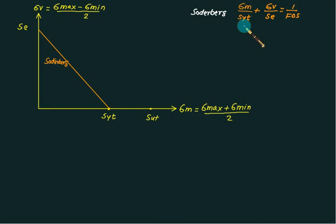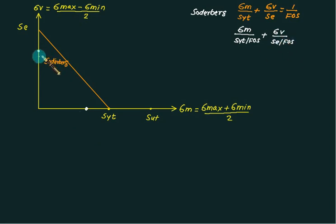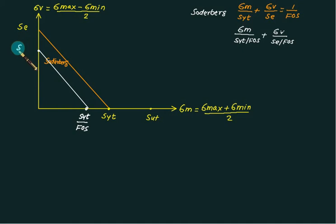Incorporating the factor of safety, the Soderberg equation becomes: sigma_m / (SYT / FOS) + sigma_v / (SE / FOS) = 1. This means both denominators are less than SYT and SE respectively. The safe design point has coordinates (SYT / FOS, SE / FOS) on the Soderberg line, ensuring we stay in the safe region.